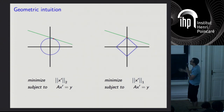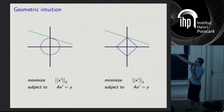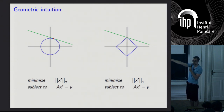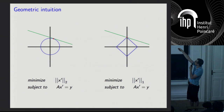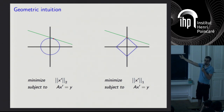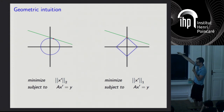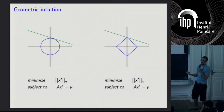Now we'll see how to analyze L1 norm minimization for compressed sensing. Here's the geometric intuition: we have a hyperplane of feasible points satisfying the linear constraint. We shrink the L1 norm ball until it touches at just one point — that point has minimum L1 norm subject to data constraints. In 2D, because the L1 ball is pointed, you tend to land on sparse signals. This is just intuition, it doesn't prove anything, but it gives an idea of why this works.